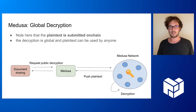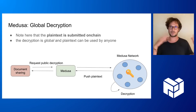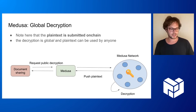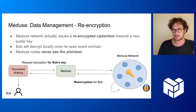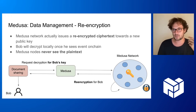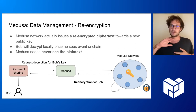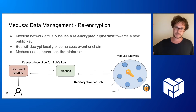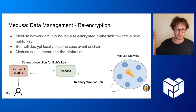There are two modes in Medusa. You can have a global decryption where the Medusa network completely decrypts the ciphertext and pushes it on-chain, so then you have the plaintext message. This can be useful for applications like bets or auctions. But you can also — and this is the focus of the demo today — focus on re-encrypting the ciphertext. This is what we need for access control management, like document sharing. You request that the Medusa network decrypt a document specifically for Bob, and instead of decrypting it, it re-encrypts the document towards Bob.